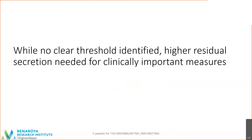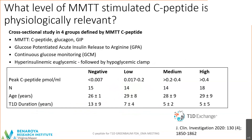Finally, I want to emphasize that while there is no clear threshold identified, it is absolutely clear that higher residual secretion is needed for clinically important measures. We did a study published last year in which we asked: what is the level of MMTT-stimulated C-peptide that would be physiologically relevant? We selected four cohorts of people according to their peak C-peptide, categorized as negative — below the threshold of detection — low, medium, or high levels, and had them undergo a variety of tests within a month to assess what level would be important for physiologically relevant responses.